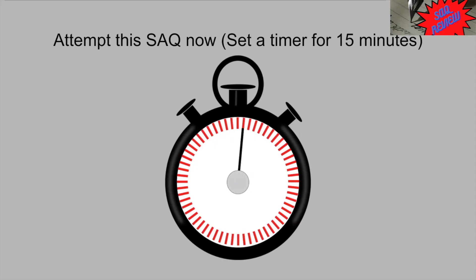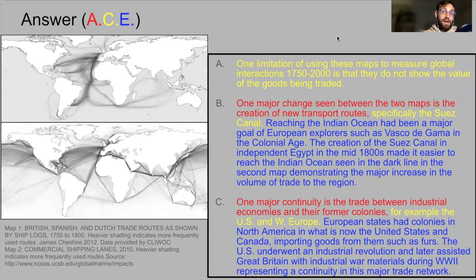Now you are going to attempt to write an SAQ. Pause this video, set a timer for 15 minutes, and then come back and compare what you wrote to the ACE answers I'm going to provide. I want to be really clear that there are many different ways to answer this SAQ, so if you didn't write the exact same thing that I wrote, that's okay — that's not a big deal. Here are my three answers to those three questions using the ACE method, with the color-coded key visible in the corner. For question one about limitations, I talked about how these maps don't show the traded value of goods — since it's an identify question, you just need to identify the answer and you're done.